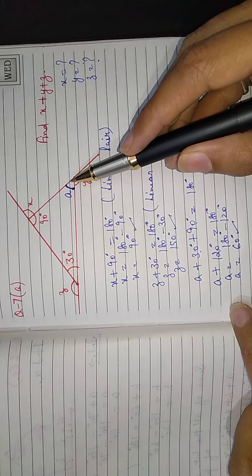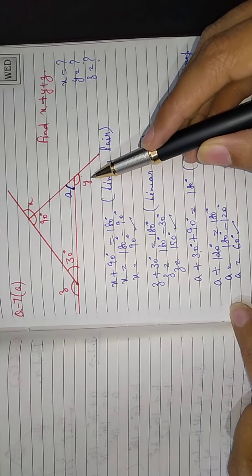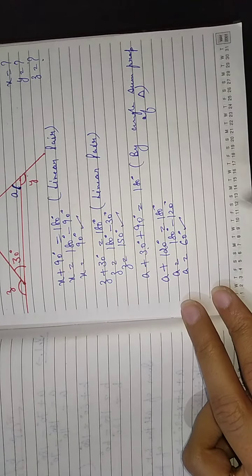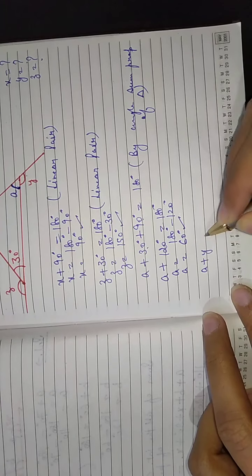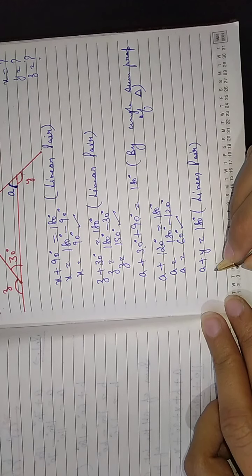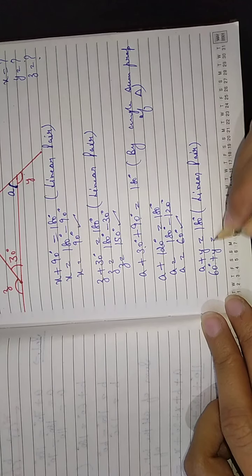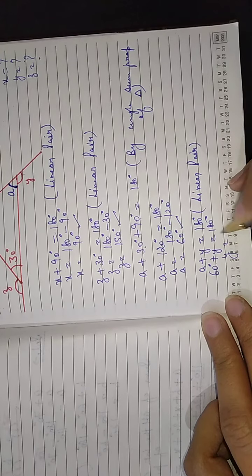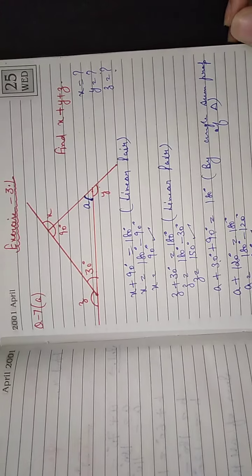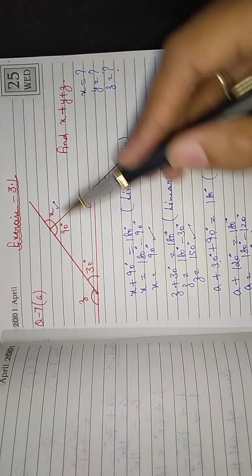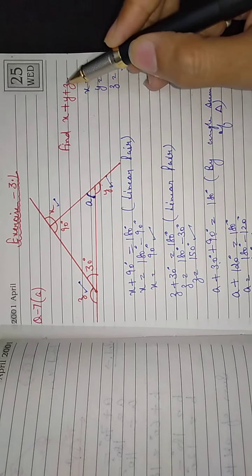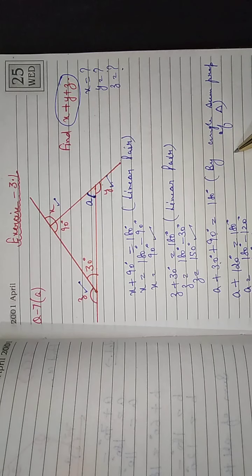Now that we have a equals 60 degrees, we can calculate y, because a and y are forming a linear pair. So a plus y equals 180 degrees — reason: linear pair. Substituting, 60 plus y equals 180, so y equals 180 minus 60, which equals 120 degrees. Now x, y, and z are all calculated. Our final step is to calculate x plus y plus z.